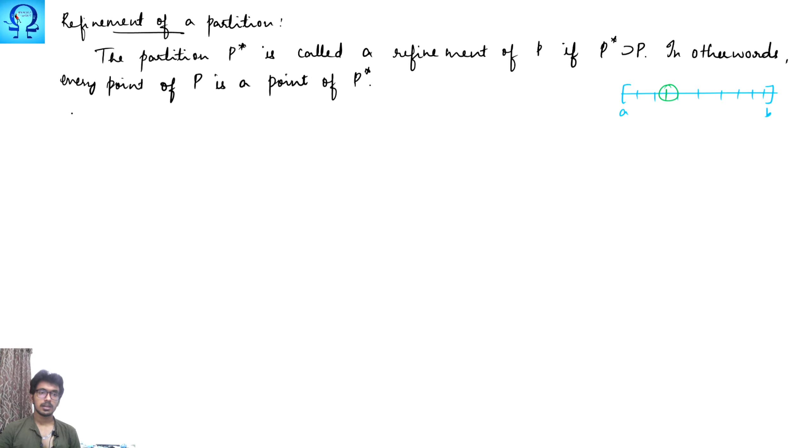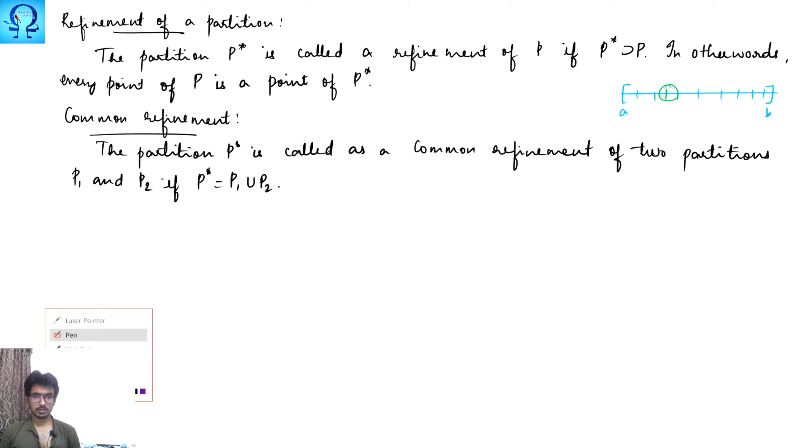Next definition is common refinement. The partition P star is called as a common refinement of two partitions P1 and P2 if P star is P1 union P2.